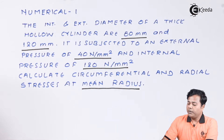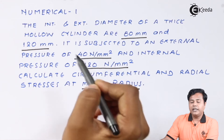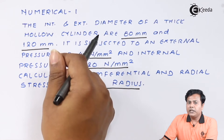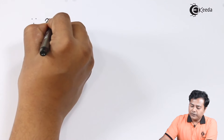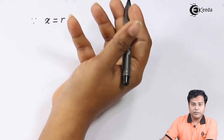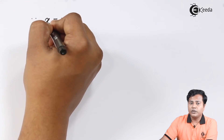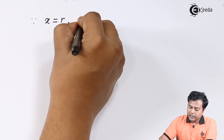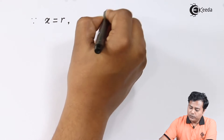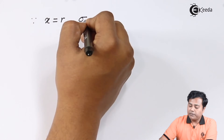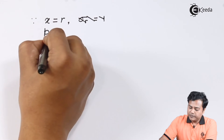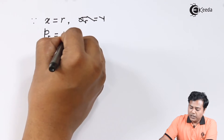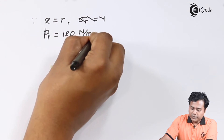Always start your numerical with the given data. At X equal to small r, the inner radius, the pressure applied is 120 Newton per mm square.